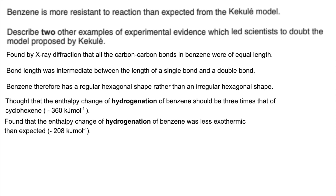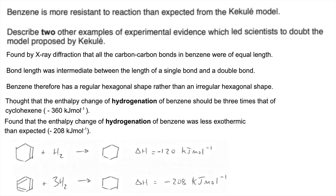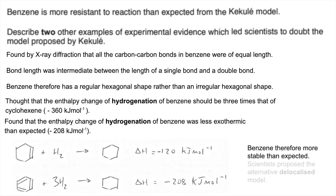It's always a good idea to put the equations in for something like this. The first equation is the hydrogenation of cyclohexene at minus 120 kilojoules per mole — you can see where that minus 360 comes from. The actual hydrogenation of benzene requires three moles of hydrogen to hydrogenate the three double bonds, and only comes out at minus 208. Because of this, benzene is more stable than expected, and therefore scientists had to propose an alternative model for benzene, which is the delocalised model.